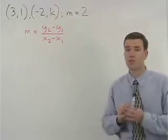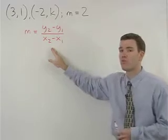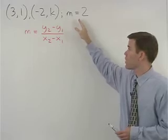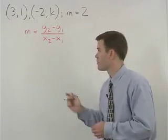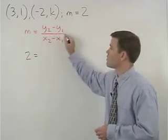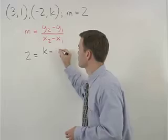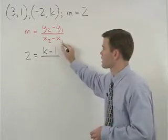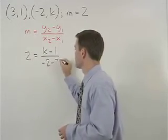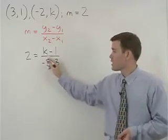So to find k we would start the problem by plugging all our given information in to the slope formula. Since our slope or m equals 2, we start by plugging a 2 in for m in our formula. So we have 2 equals y2 minus y1 would be k minus 1. x2 minus x1 would be negative 2 minus 3.